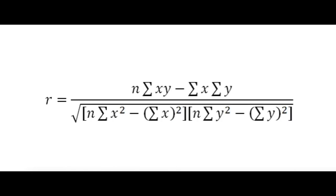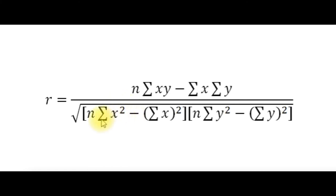There are a few different versions of the formula for calculating the PMCC. We're going to use this one: r equals n·ΣXY minus ΣX·ΣY. This means you multiply the X and Y values together for each data point and then sum them all. The denominator contains n·ΣX² minus (ΣX)² and similarly for Y, all under a square root symbol applying across the whole denominator.